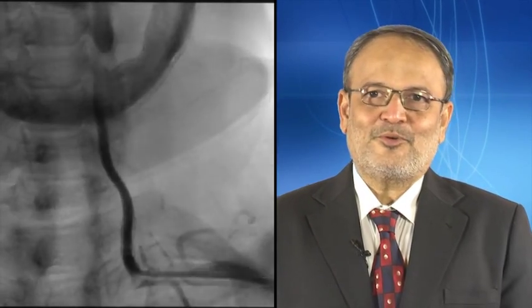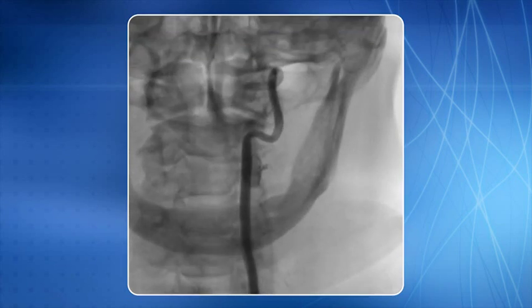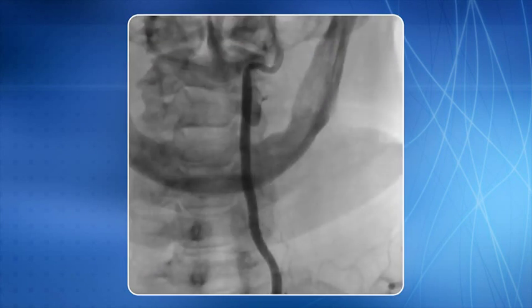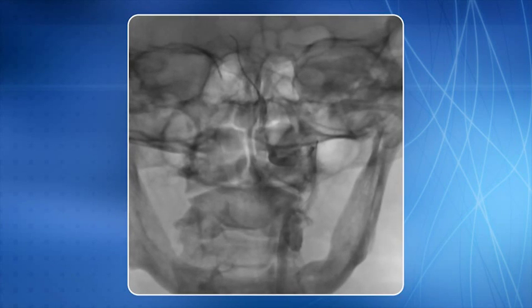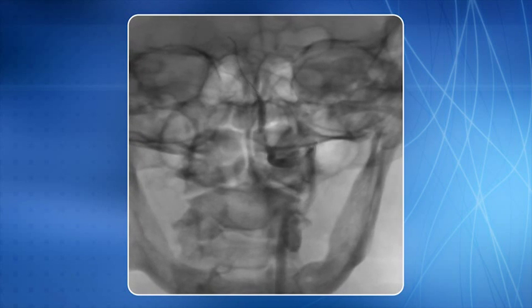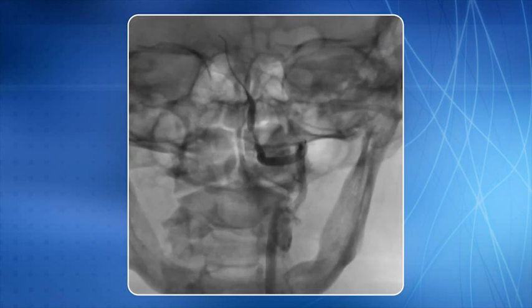This is a case of stenting of chronic intracranial left vertebral artery stenosis using the left transradial approach. The lesion is profiled. Note that the ostium of the left vertebral artery is cannulated using a 6F internal mammary artery guide catheter. A 0.014 inch BMW PTCA guide wire is negotiated across the lesion and the tip is parked distally in the basilar artery.